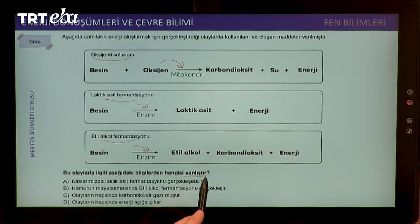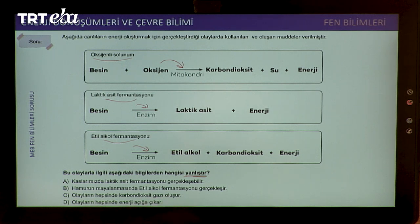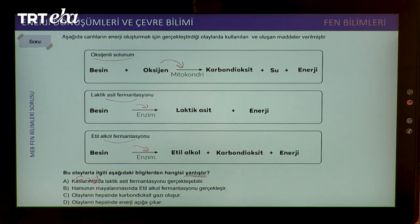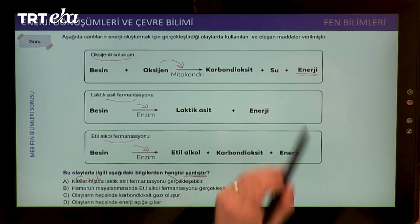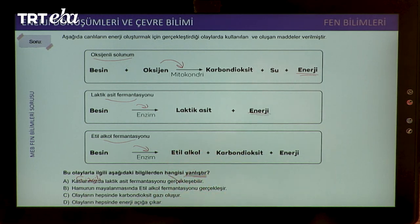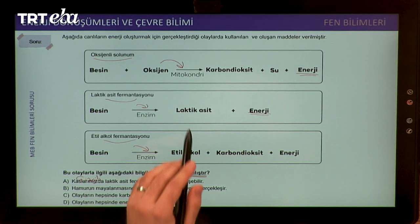Bu olayla ilgili aşağıdakilerden hangisi yanlıştır? Kaslarımızda laktik asit fermentasyonu gerçekleşebilir — hangi kaslarımızda? Çizgili kaslarımızda. Eğer bu kasları çok hızlı veya fazla kullanırsak, oksijenli solunumda ürettiğimiz enerji yetmediği için laktik asit fermentasyonuyla destekliyoruz. Fakat buradaki laktik asit kaslarımızın yorgunluğunu arttırıyordu ve bir süre sonra bu hareketi gerçekleştiremiyorduk.